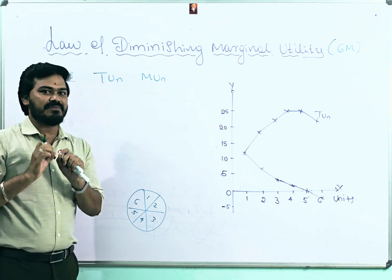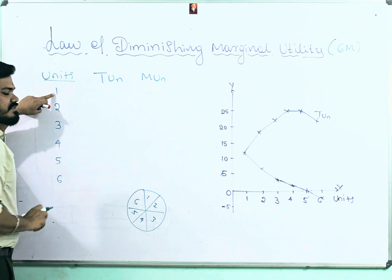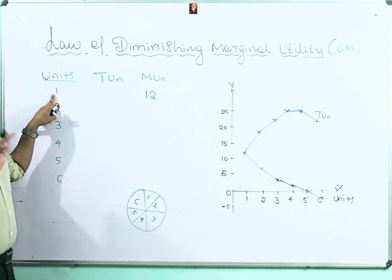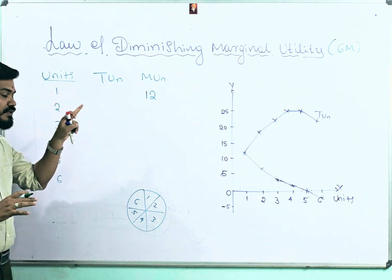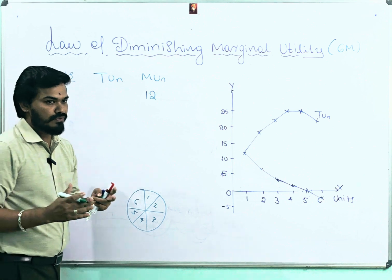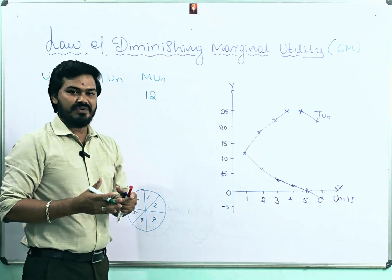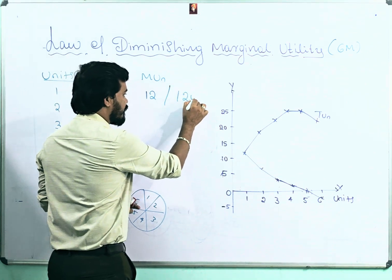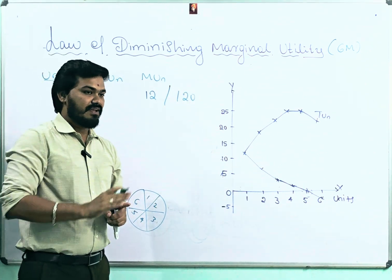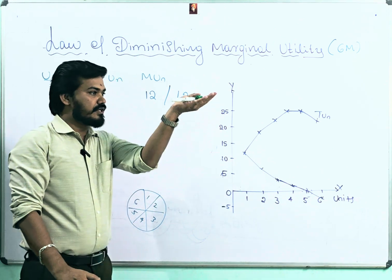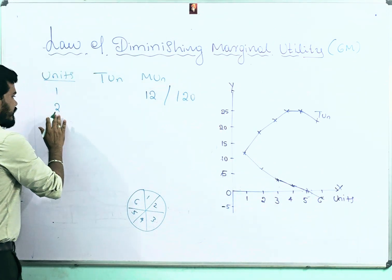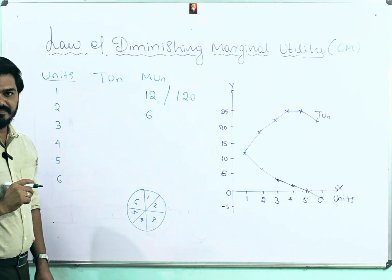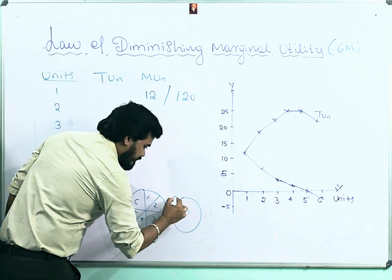Since you haven't eaten since morning and are completely hungry, the first piece of pizza will provide you 12 utiles of satisfaction. There is no rule to take a specific number — you can take 120 if you wish. But the process must be clear: marginal utility should decrease and total utility should increase. The second piece of pizza will give you 6 utiles.